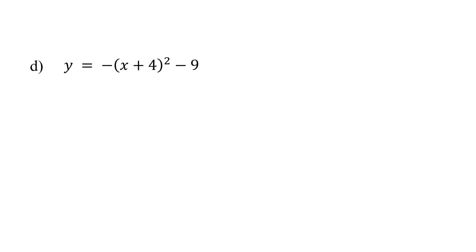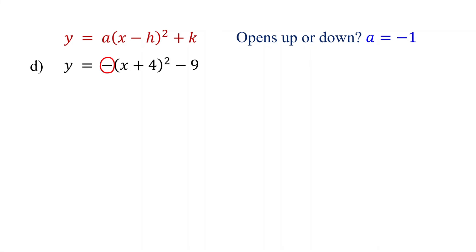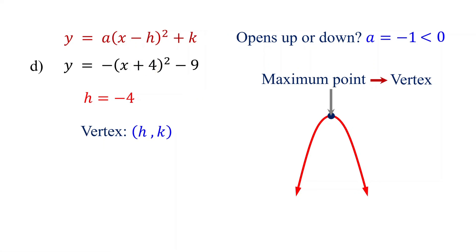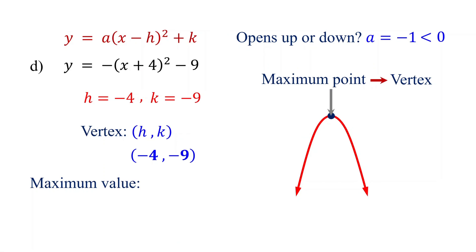Now, try this one. a is negative 1, which is less than 0, so the parabola opens downward. Therefore, the quadratic function has a maximum point, which is the vertex. To find the vertex, identify the values of h and k. h is the opposite of the number inside the parentheses, so it becomes negative 4. k is the constant term, so it is negative 9. So the vertex is the point (negative 4, negative 9). The maximum value of the quadratic function is the y-coordinate of the vertex, which is negative 9. This occurs when x equals negative 4.